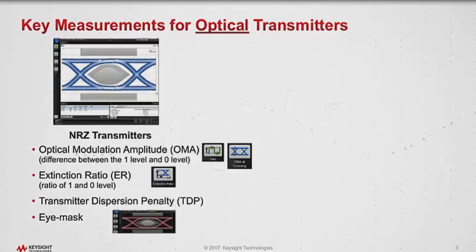There's another measurement called transmitter dispersion penalty or TDP — it's a BER-based measurement. And then the very traditional mask test, which puts up a standards-based keep-out region for the transmitted waveform.